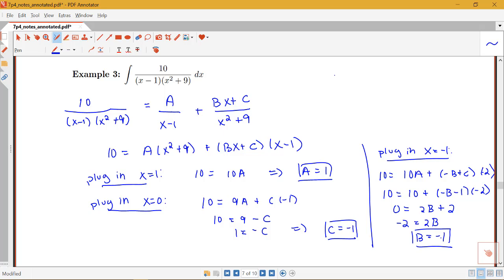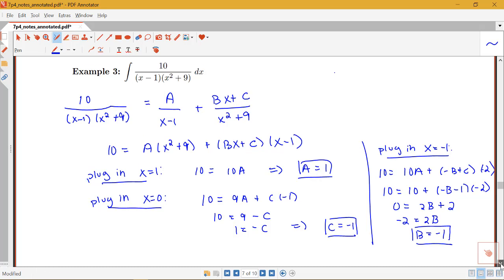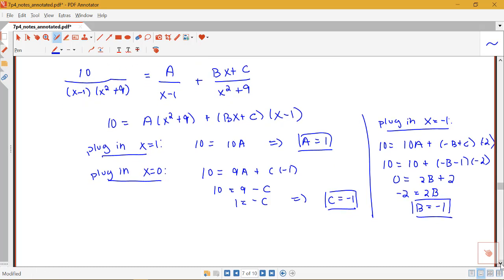Okay so B is -1, A is 1, and C is -1. So now we're ready to use this decomposition in order to actually evaluate the integral. So we're going to have that our integral of 10/(x-1)(x²+9) dx is equal to the integral of A/(x-1) plus (Bx+C)/(x²+9). So this will be 1/(x-1) + (-x-1)/(x²+9) dx.